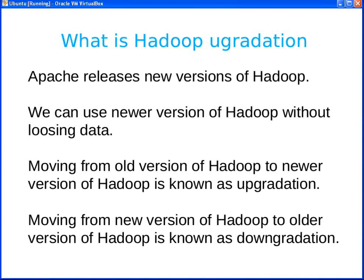Apache keeps releasing newer versions of Hadoop. We can use a newer version of Hadoop without losing data. Currently, whatever version we are using, we have some data in our HDFS — some input files, some output files — and we don't want to lose that. But we also want to use the new features. Moving from an older version of Hadoop to a newer version is known as upgradation.